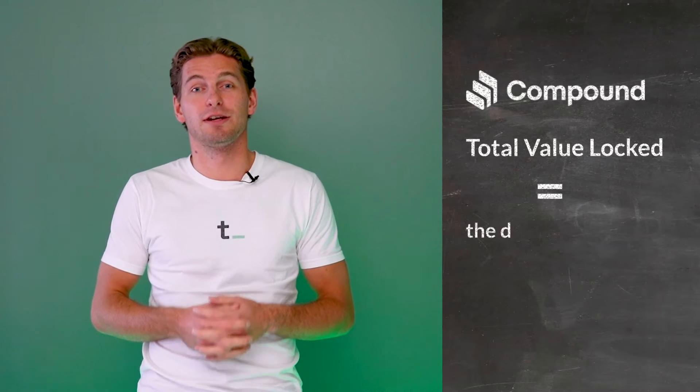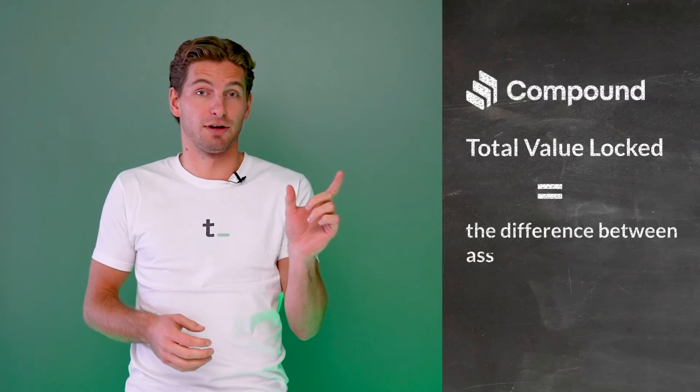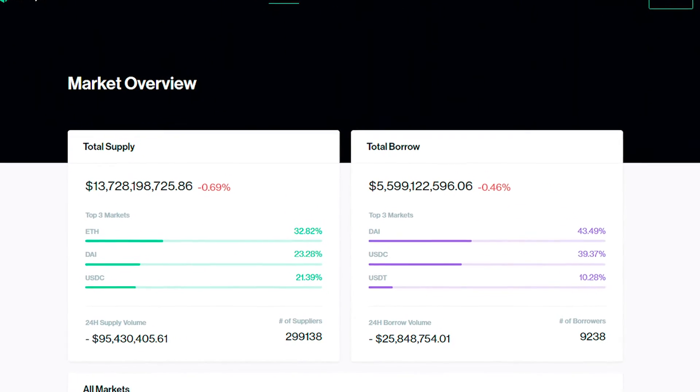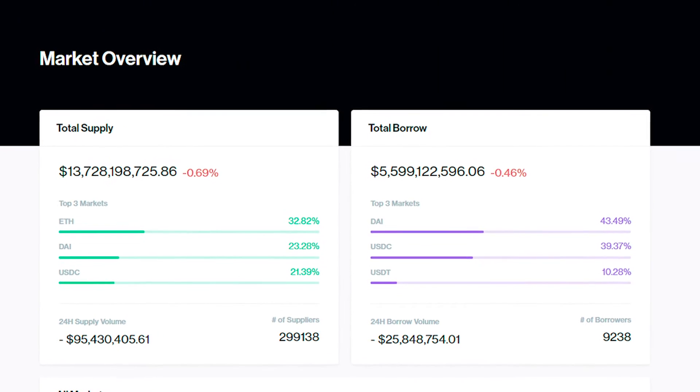In the case of Compound, the total value locked equals the difference between total deposits and total borrows, since that is the amount of assets that are locked inside their smart contracts. This is because a share of these deposits are withdrawn from the markets as borrowers take out loans. So total value locked equals assets deposited minus assets borrowed. By calculating the difference between the total supply and the total borrow, we arrive at approximately 8 billion dollars.